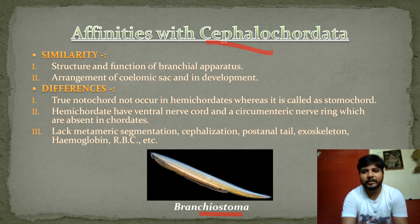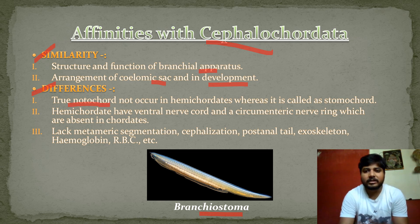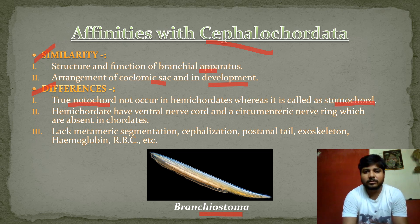The next affinity is with Cephalochordata. The most common example is Branchiostoma, also known as Amphioxus. The similarities of Amphioxus with Hemichordata (Balanoglossus) include the structure and function of the branchial apparatus, the arrangement of the coelomic sac, and similarities in development. However, there are also differences — the true notochord does not occur in hemichordates; instead what is present is called the stomochord.